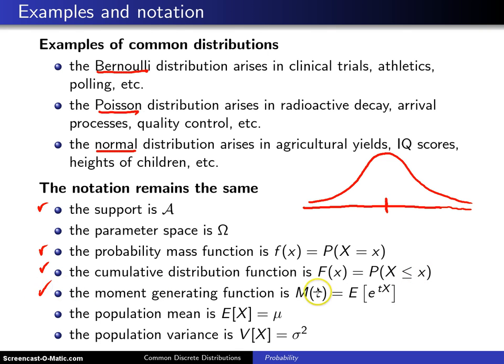The moment generating function is still M of t, which is the expected value of e to the tX. The population mean is still the expected value of X or mu. The population variance is V of X, which is sigma squared.